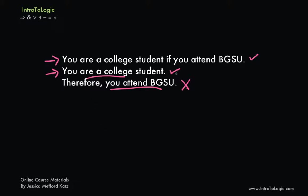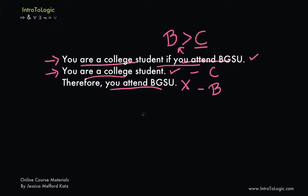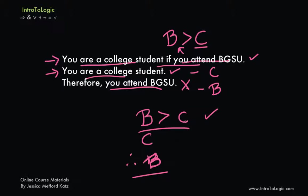We can analyze the argument more closely by putting it into symbolic form. We have a conditional in the first premise: if you attend BGSU — where 'you attend BGSU' equals B — then you are a college student, symbolized with the letter C. 'You are a college student' is then C, and 'therefore you attend BGSU' is then B. So our argument in formal form is: if B then C; C; therefore B. If you've studied affirming the consequent before, you know right away this is a case of it — because you have a conditional as one premise, the consequent of that conditional as your other premise, and you've used these two premises to try to derive the antecedent B. That is a clear case of affirming the consequent.